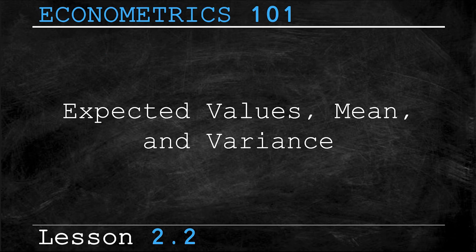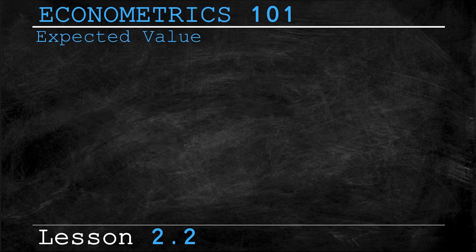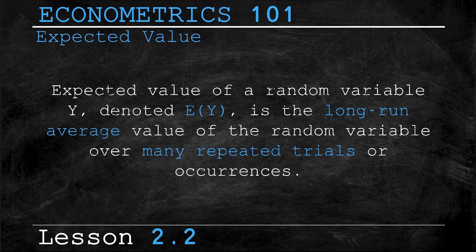To start us off, we're going to be looking at the topic of expected value. Now expected value of a random variable, let's call it Y, can be denoted E(Y) and it's the long run average value of a random variable over many repeated trials or occurrences.